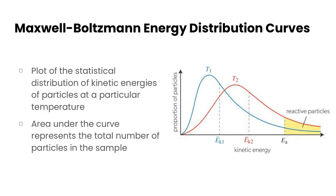So knowing that, what is a Maxwell-Boltzmann energy distribution curve? Essentially it's a plot of the statistical distribution of kinetic energies of particles at a particular temperature. We create these curves by taking the proportion of particles and plotting it against kinetic energy.